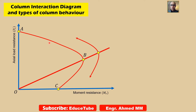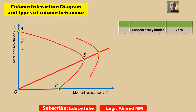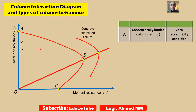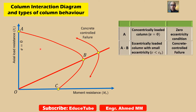First of all, a concentrically loaded column is represented by a point, say A. This point corresponds to zero eccentricity condition, E equal to zero. An eccentrically loaded column with a small eccentricity is represented by the region bounded by A and B. This region is characterized by concrete-controlled failure, initiated by concrete crushing.